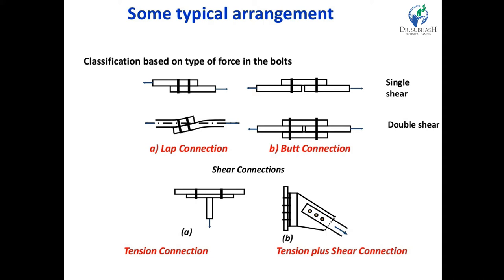There are two types in lap connection. The second one is butt connection. Again, there are two types in butt joint: single cover butt joint and double cover butt joint. As per the force concerned, we use these two types of connection. In the case of lap joint, two members overlap and are connected by means of bolt or weld — this is called a lap joint.